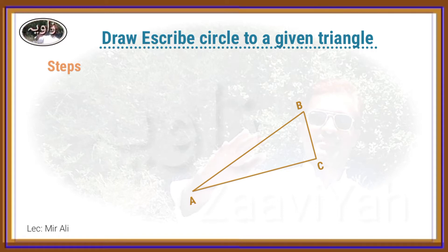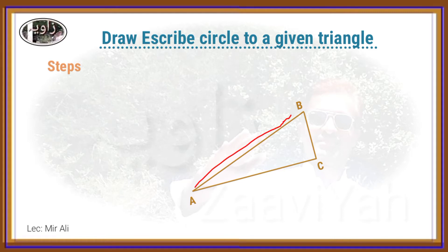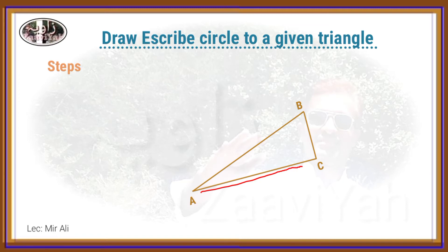The circle is tied to the triangle. The triangle ABC is tied to the triangle.